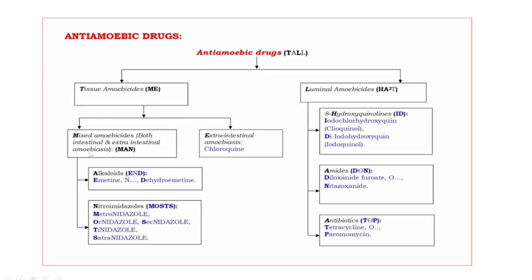First let us discuss mixed amoebicides. They act against both intestinal and extra-intestinal amoebiasis. These are further subdivided into two groups using the mnemonic MAN: M means mixed amoebicides, A means alkaloids, N means nitroimidazoles. For alkaloids, the drugs are given with bold letters E and D — E means emetin, D means dehydroemetin.